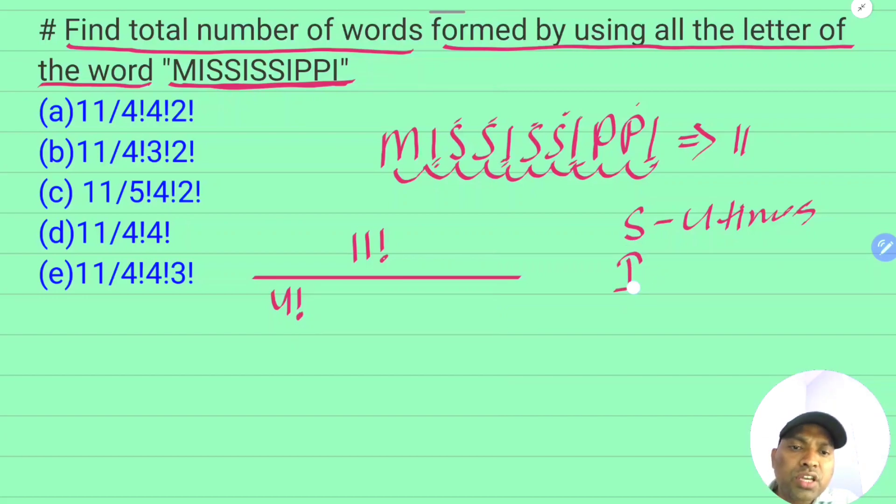I appears how many times? Four times. So divide by 4 factorial. P appears how many times? Two times. Divide by 2 factorial.